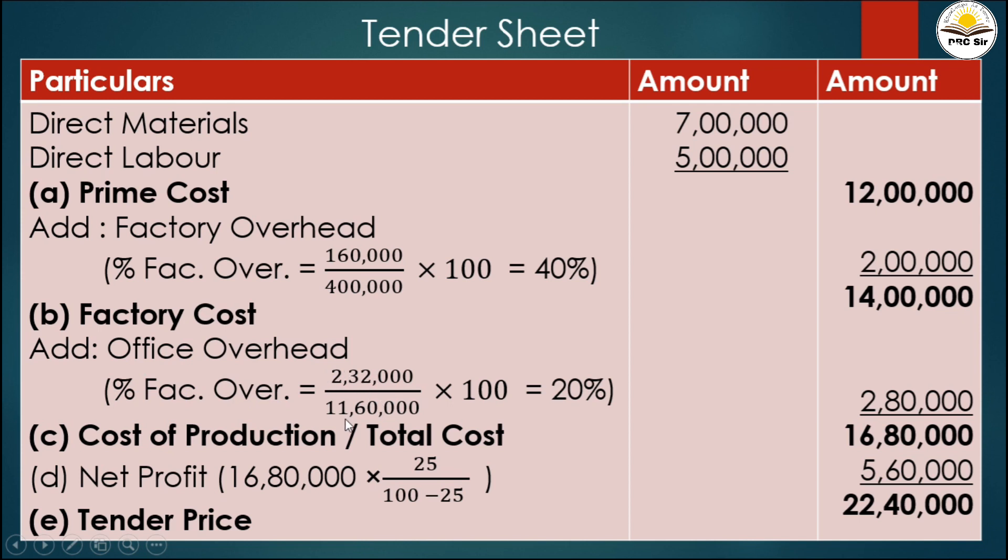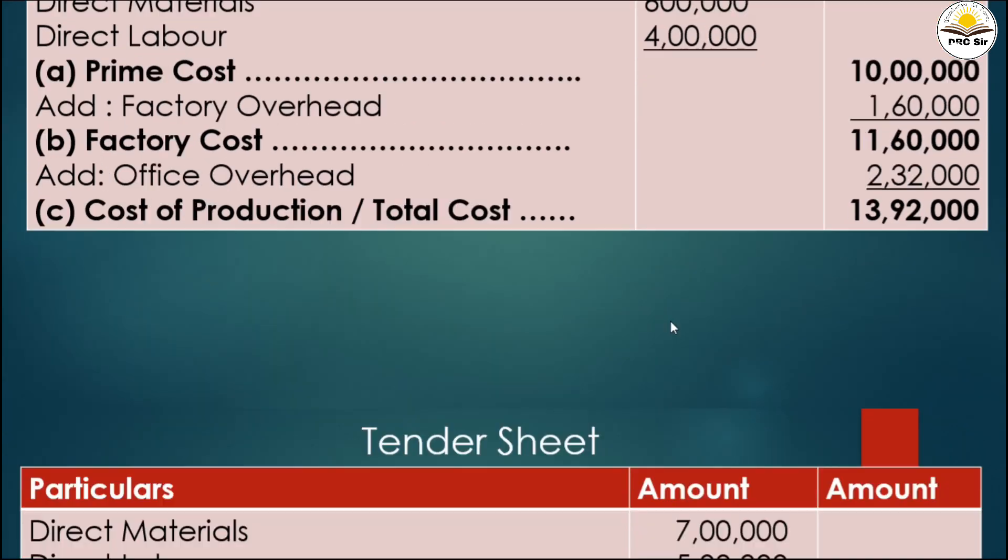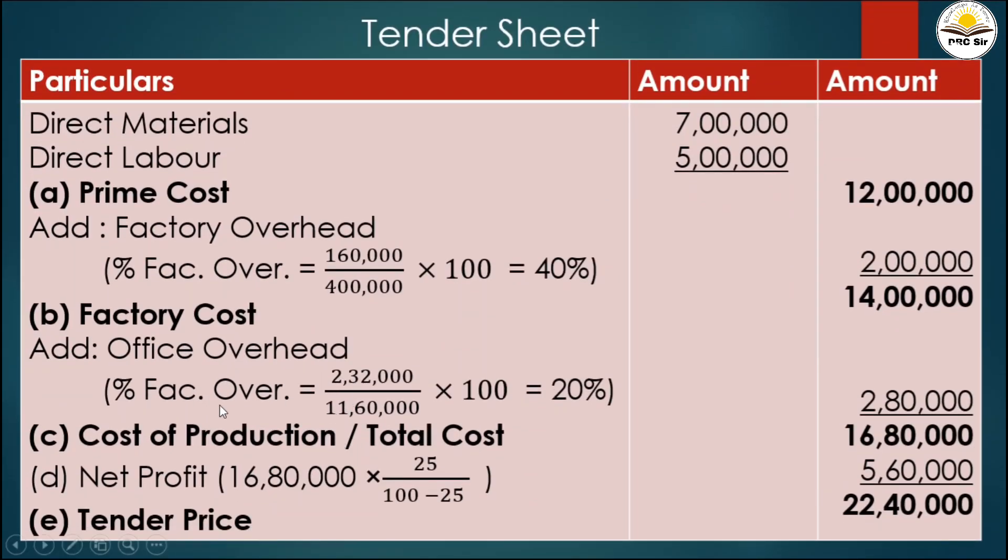Percentage of office overhead equals office overhead divided by factory cost times 100. Office overhead is 2 lakh 32 thousand and factory cost is 11 lakh 60 thousand. This equals 20 percent.